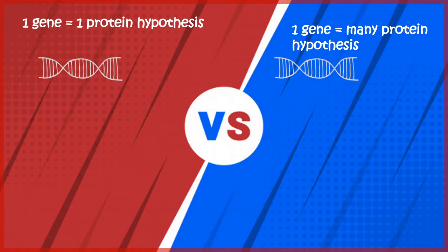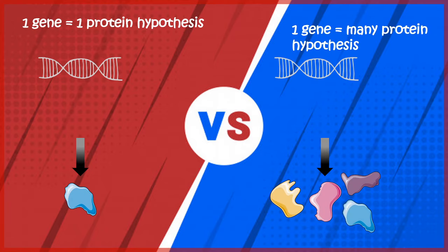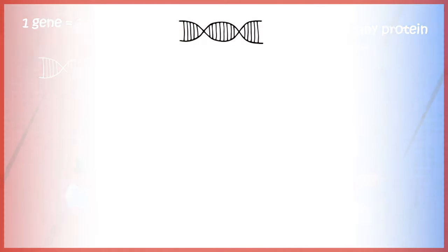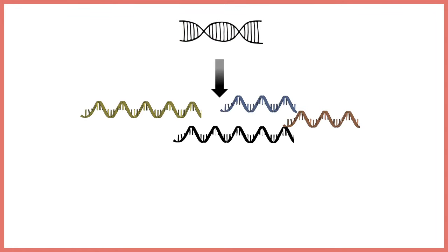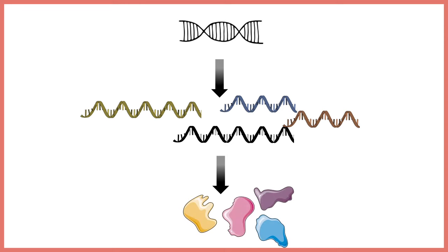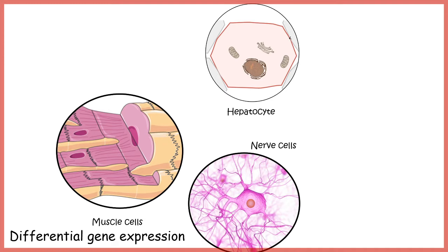So there are two hypotheses: one gene equals one protein, or one gene equals many proteins. If one gene codes for one protein, there should only be 25,000 proteins — not 500,000. To explain the one-gene-many-protein hypothesis, the alternative splicing machinery was later discovered.